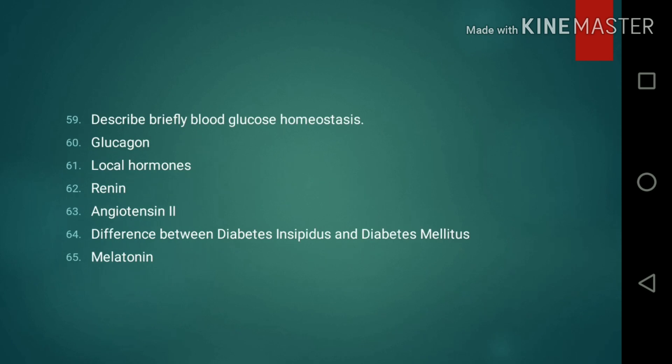Short notes continued: 59. Describe briefly blood glucose homeostasis. 60. Glucagon. 61. Local hormones. 62. Angiotensin II. 63. Difference between diabetes insipidus and diabetes mellitus. 64. Melatonin.